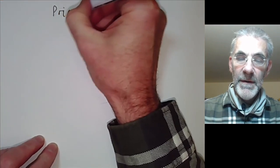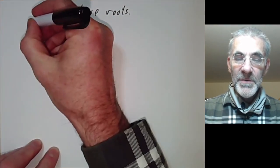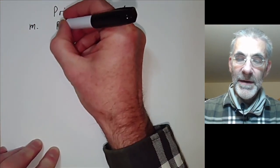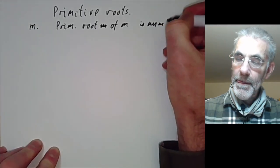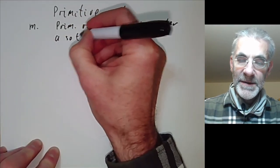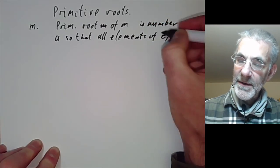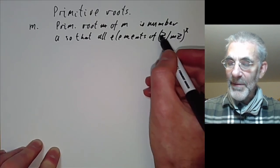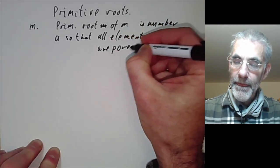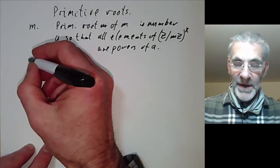This lecture is part of an online course on the theory of numbers and will be about primitive roots. So first, let's explain what a primitive root is. Suppose you pick some modulus m — a positive integer. Then a primitive root of m is a number a such that all elements of (Z/mZ)*, the group of numbers modulo m that are co-prime to m, are powers of a. Let's see some examples to get an idea of what's going on.